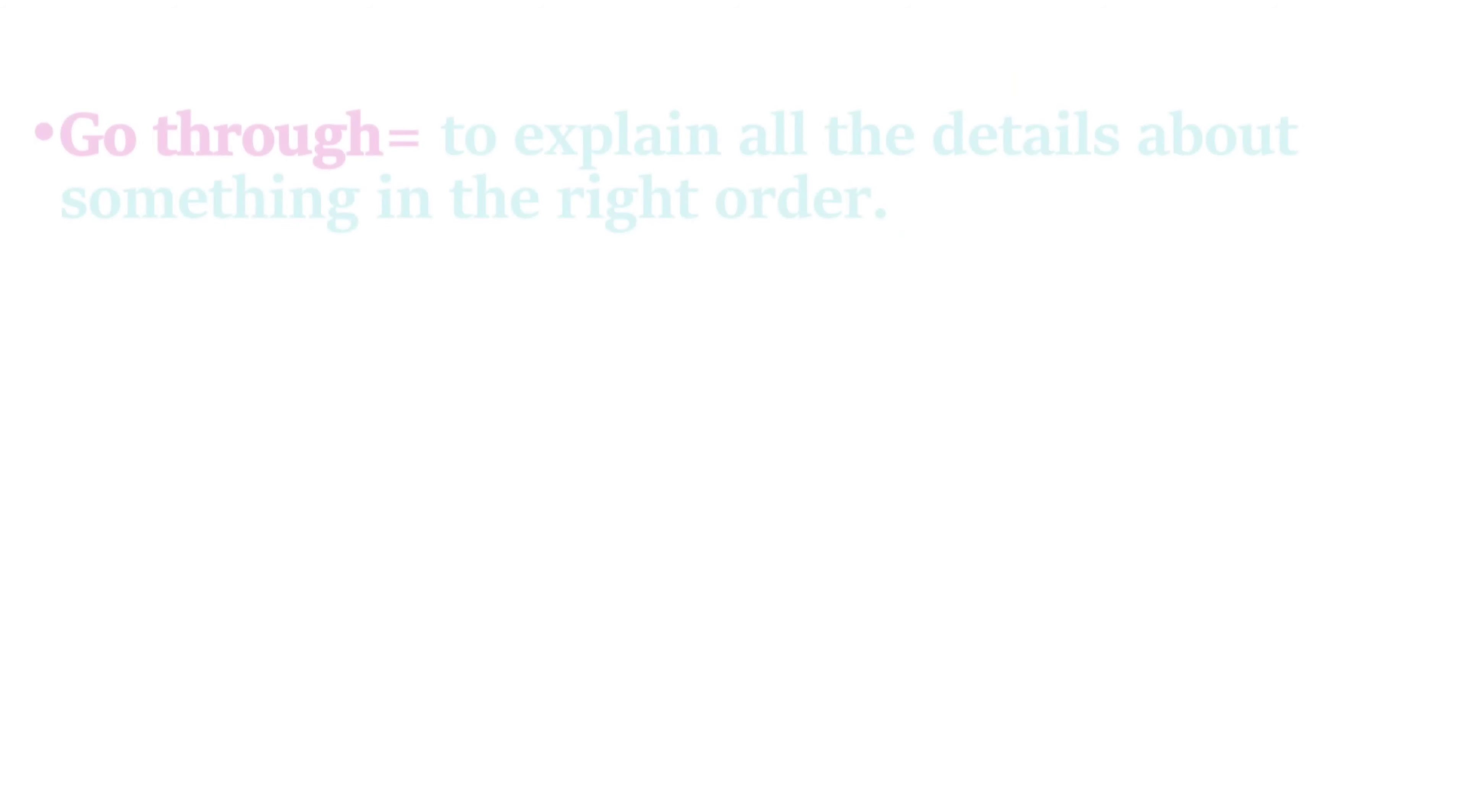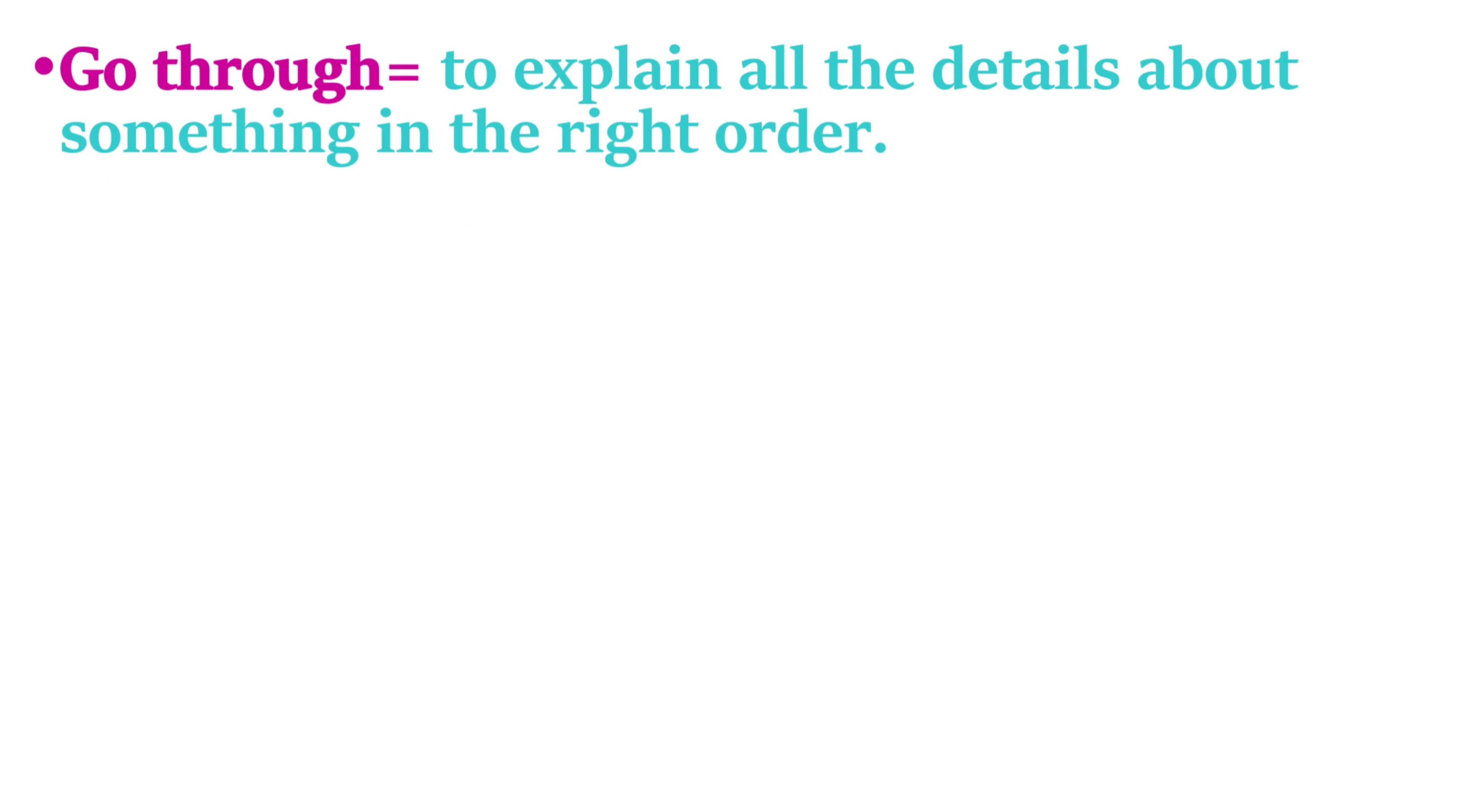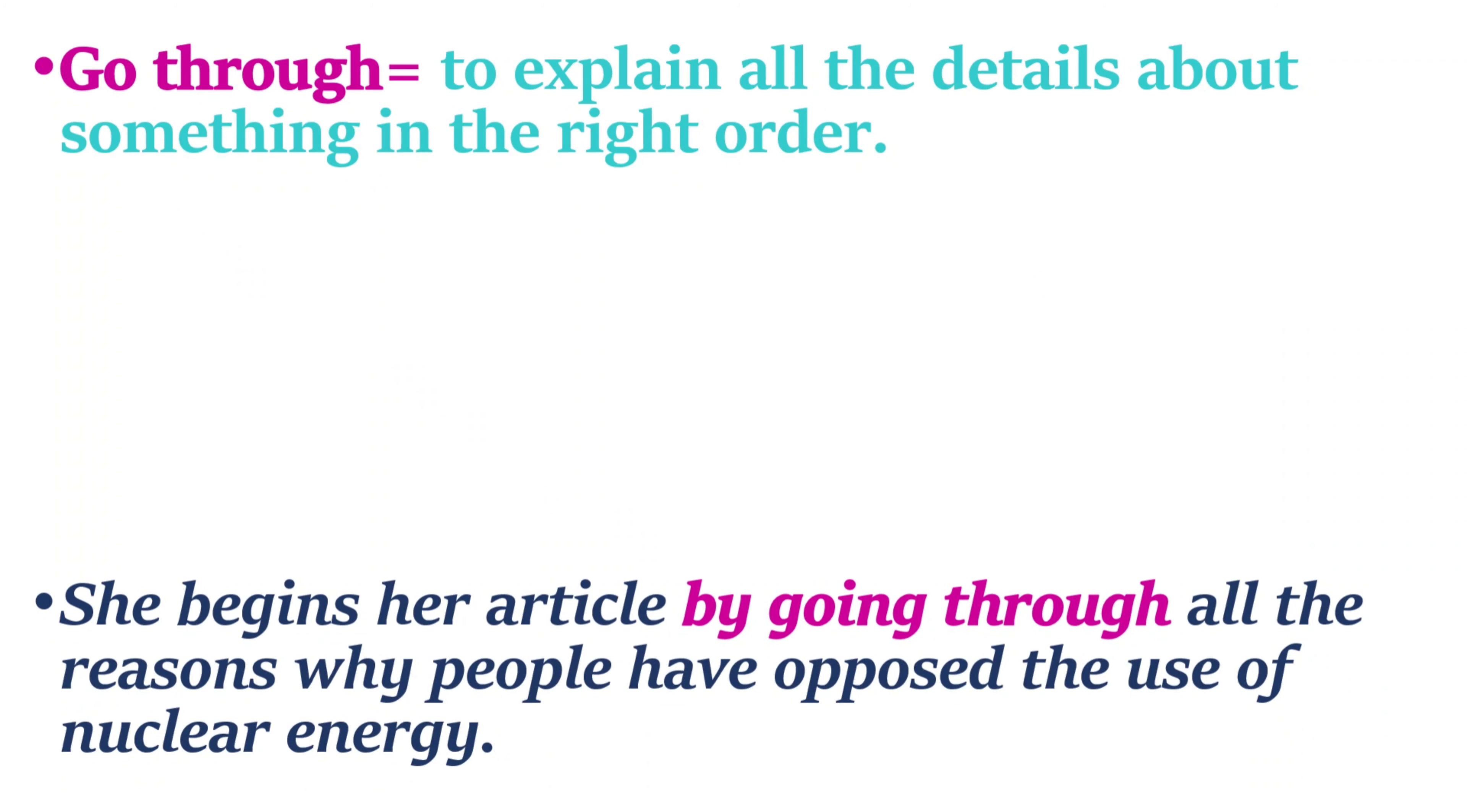'Go through' means to explain all the details about something in the right order. Example: She begins her article by going through all the reasons why people have opposed the use of nuclear energy.